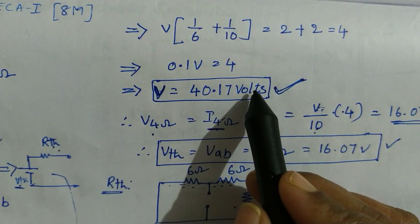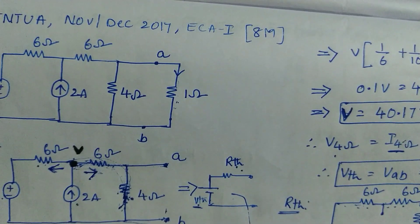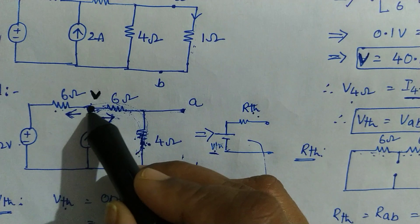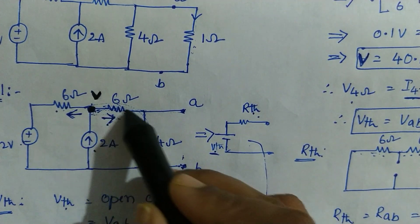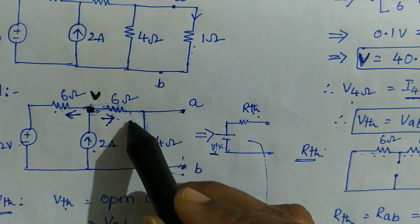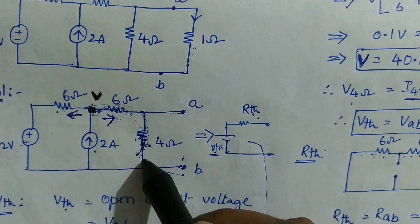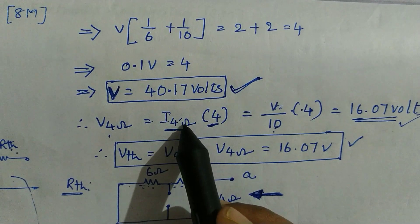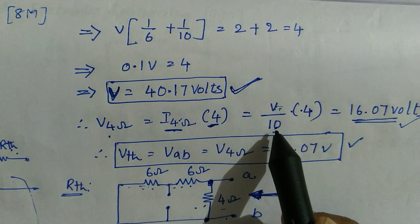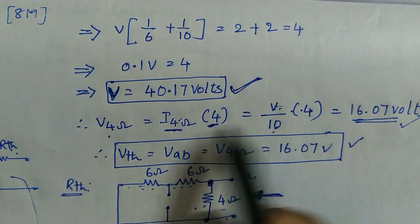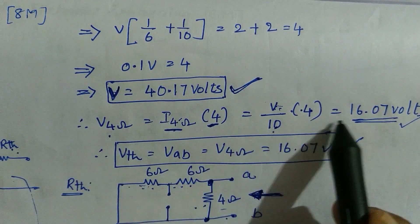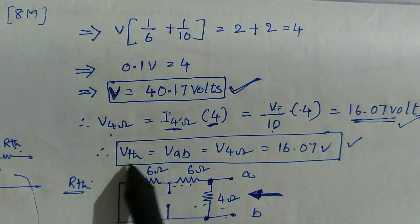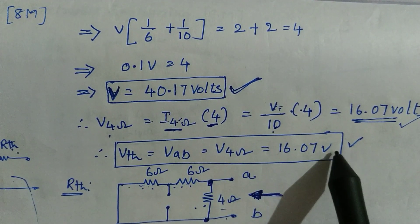Solving this particular equation gives us the value for voltage V. But this is not the final solution — we need to find voltage across the 4 ohm resistor, and for that we need this branch current, which is V by 10. The same current flows through 4 ohm as well. So the voltage across 4 ohm is V by 10 into 4. After calculations, we get the value for V Thevenin as 16.07 volts.